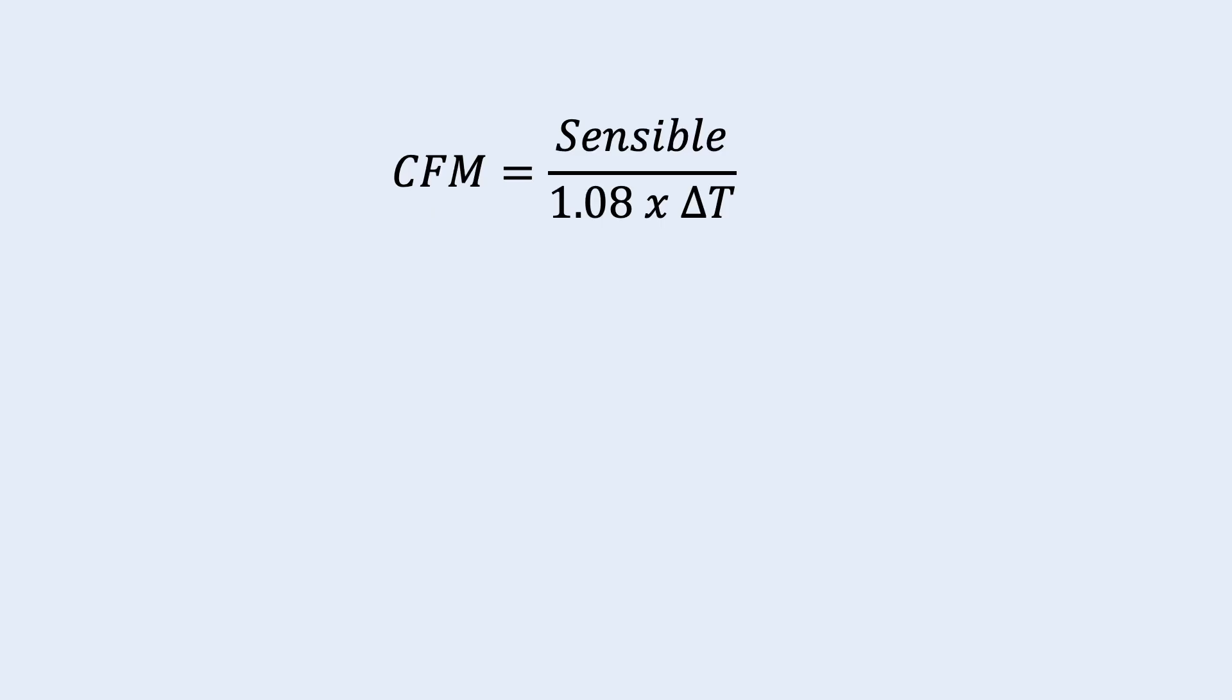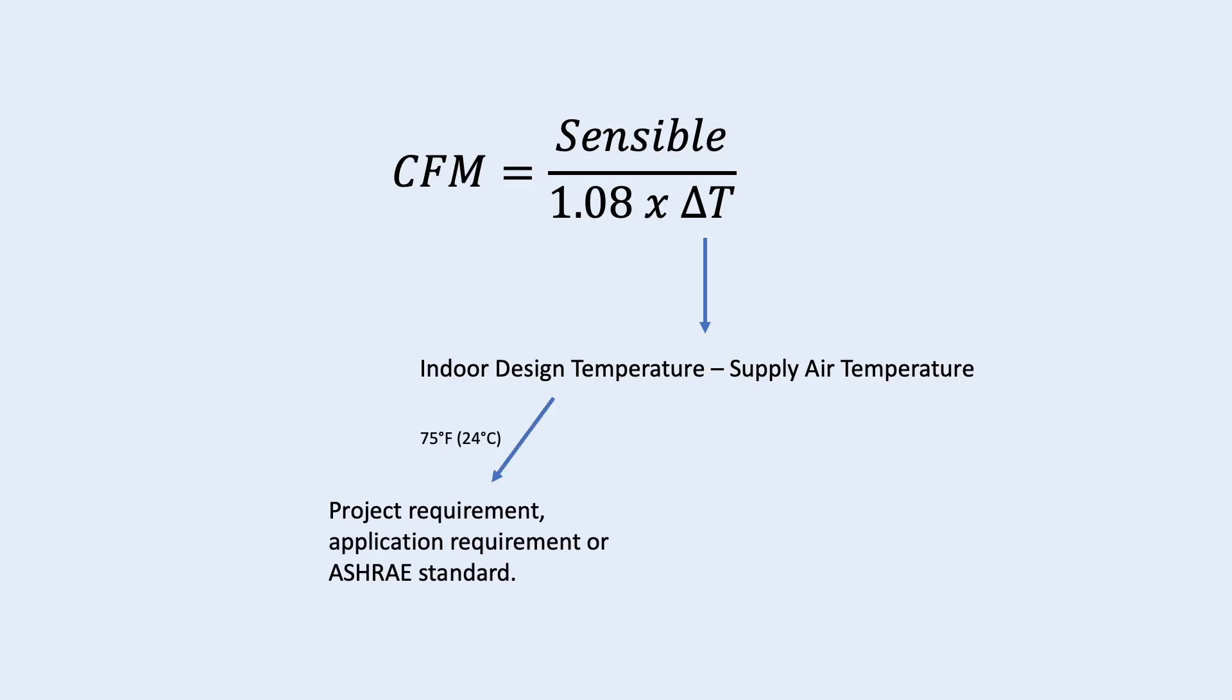Airflow is equal to sensible cooling load divided by 1.08 times delta T. The delta T is the difference between the indoor design temperature and the supply air temperature. For the indoor design temperature, it is typically 75 degree Fahrenheit for comfort cooling. However, we also need to follow what the project or the application is required.